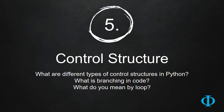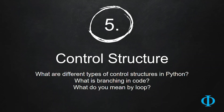Starting from this video and the few videos afterwards, we are going to learn about different types of control structures available in Python. Like other programming languages, there are three major types: the first is sequential control structure, the second is the branching control structure denoted with if/else, and the third is the loop control structure, for which we will learn about while loop and for loop.